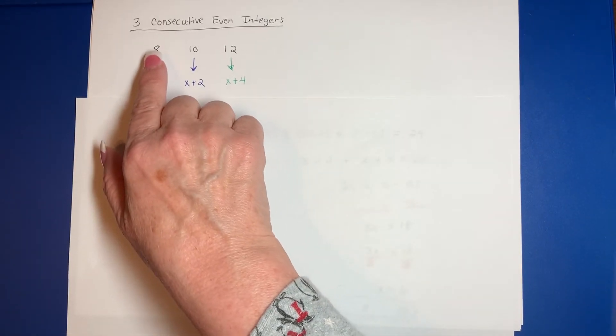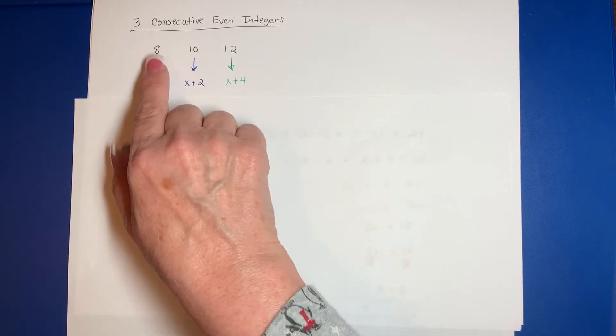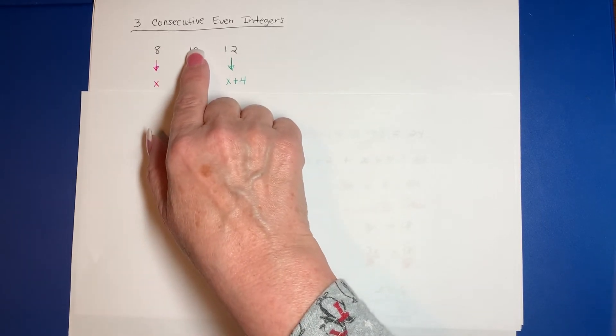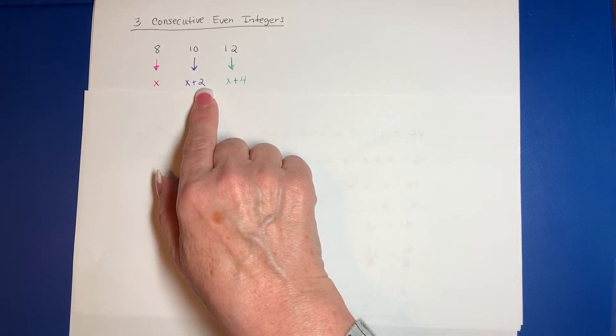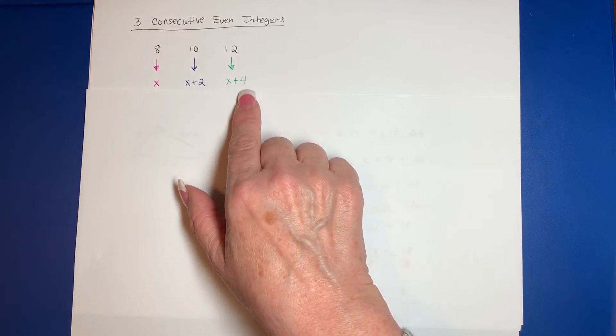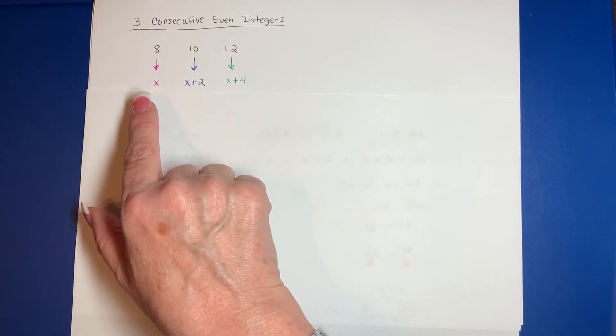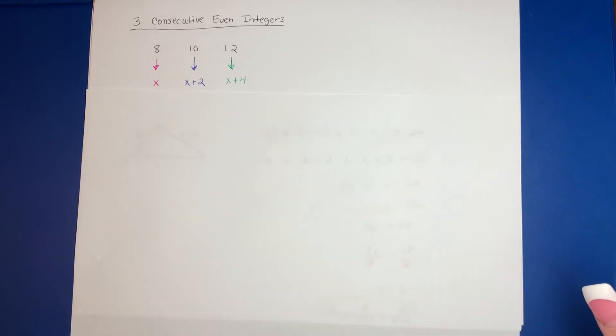I could go with like 20, 22, and 24. If I let 20 be X, then 22 would be X plus 2, and 24 would be X plus 4. So you can use X, X plus 2, and X plus 4 for any three consecutive even integers.